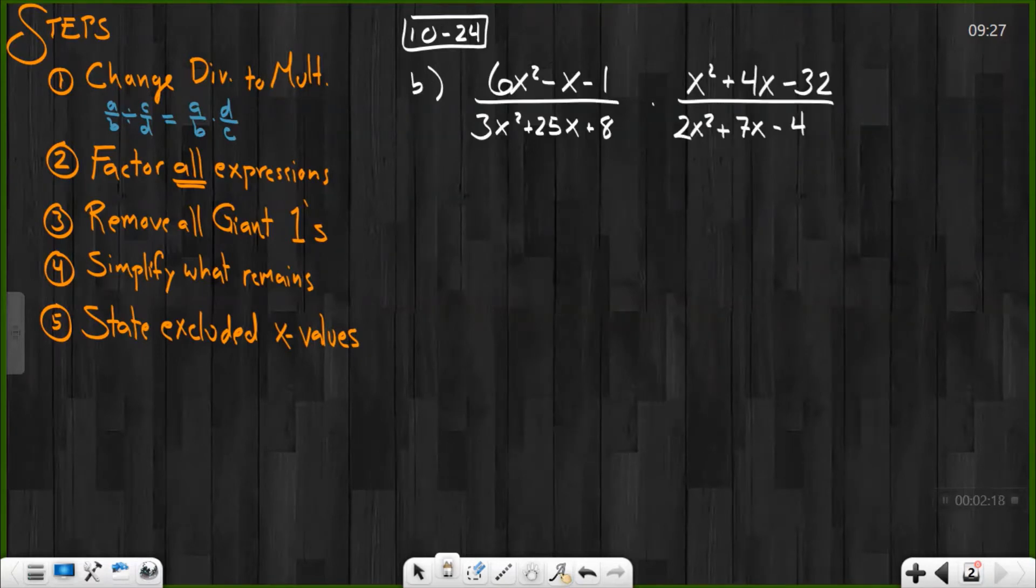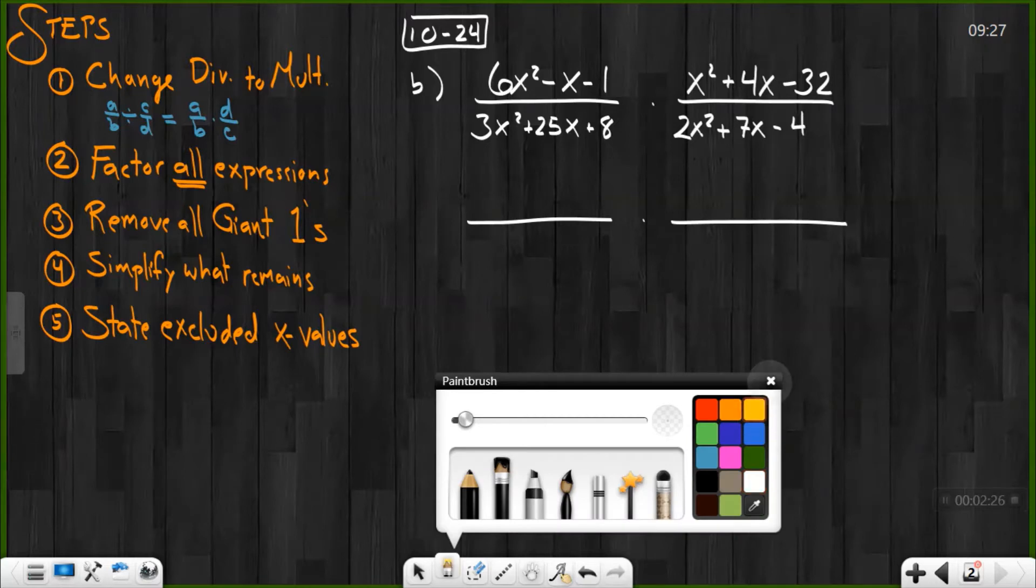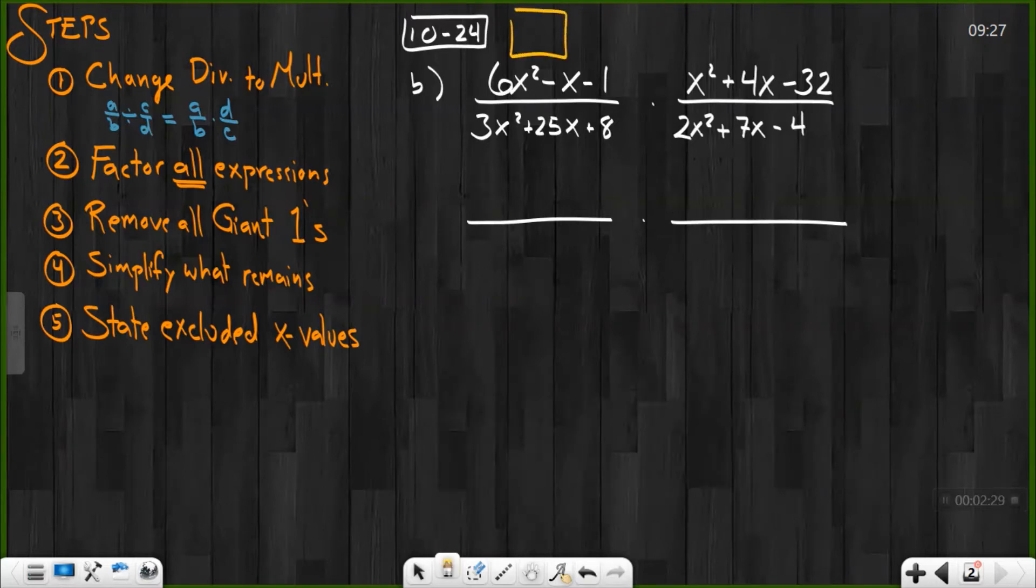See how you did on b. Already multiplication. Great. So let's go ahead and set ourselves up for where we're going, which is to factor. And I'm going to factor out each of these off to the side. So this one right here, this is a nice little dime problem generic rectangle.